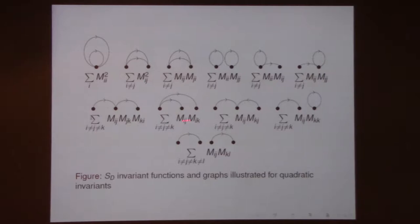The invariant Mᵢᵢ² is one graph, Mᵢⱼ Mᵢⱼ is another, and so on. You draw all the different graphs you can. There's a typo — this should be MᵢⱼMⱼₖ. These are a set of 11 independent functions.